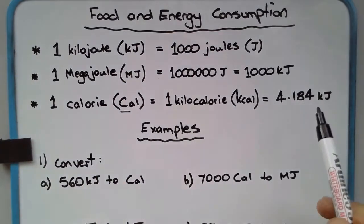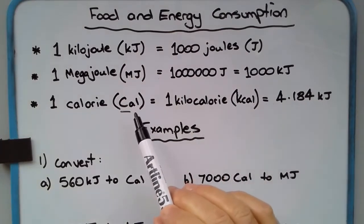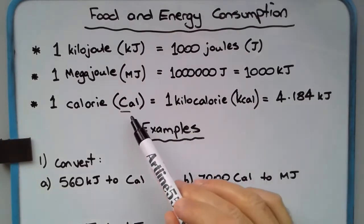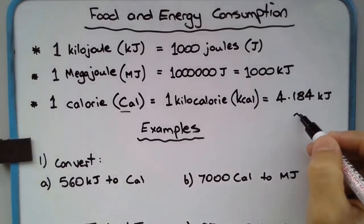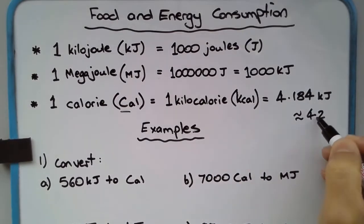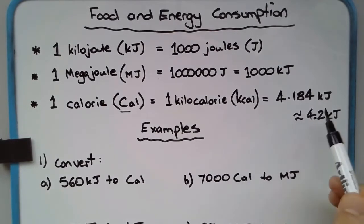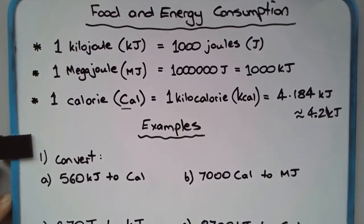The conversion between the calorie and the kilojoule is one calorie equals 4.184 kilojoules, which is roughly around 4.2. Sometimes it might be easier to remember 4.2, but the more exact conversion is 4.184. Let's have a look at some examples.